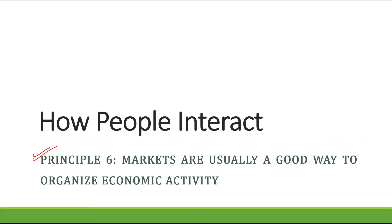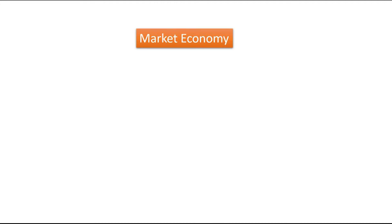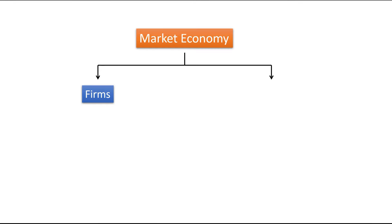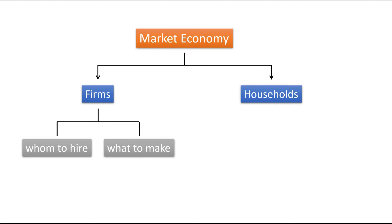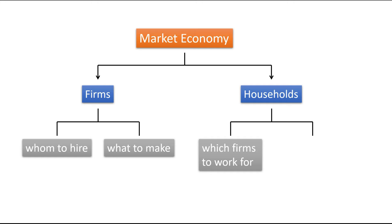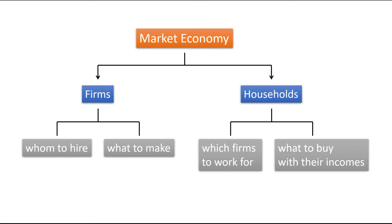In a market economy we have two players: the first one is firms and the other one is households. Firms decide whom to hire and what to make. On the other hand, households decide which firms to work for and what to buy with their incomes.